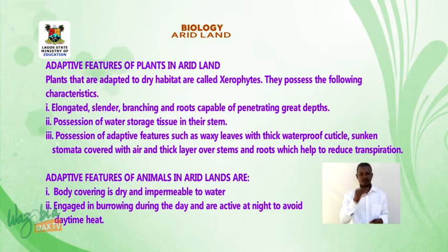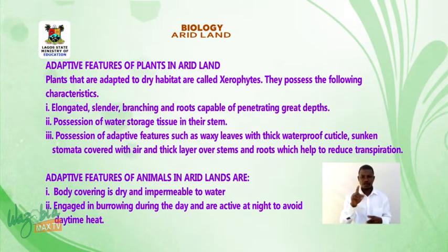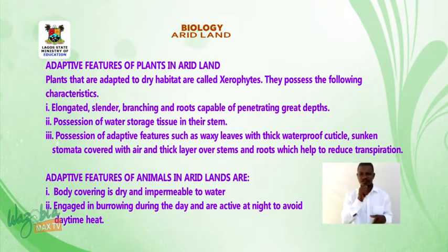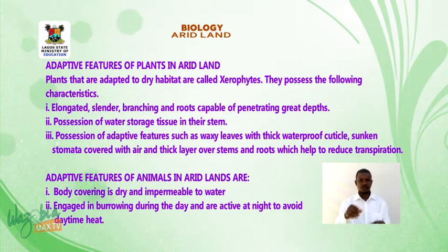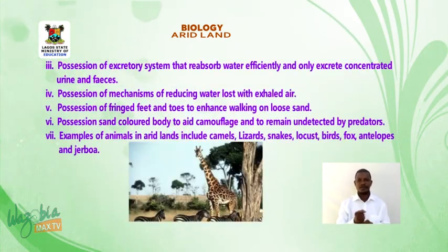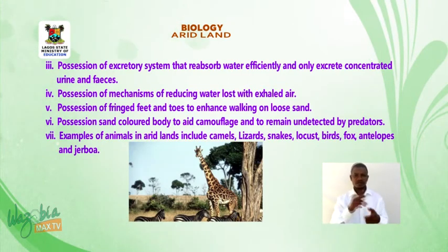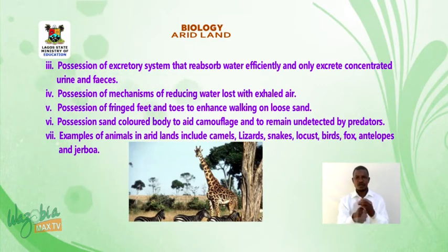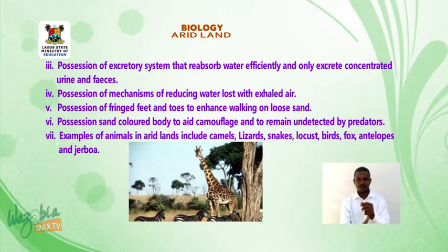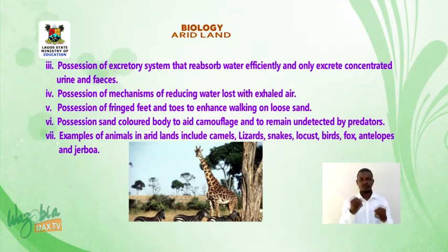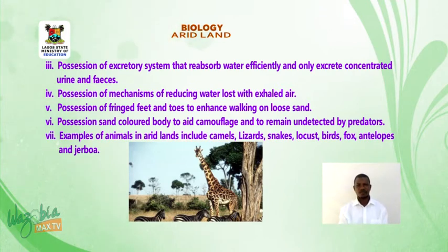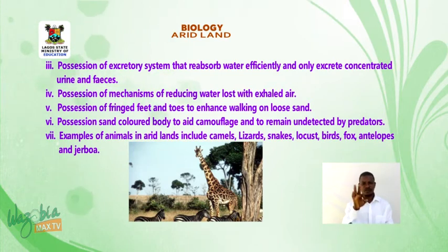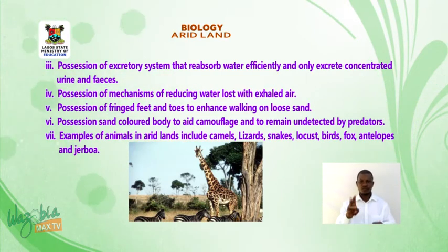Adaptive features of animals in arid lands: one, body covering is dry and impermeable to water; two, they engage in burrowing during the day and are active at night to avoid daytime heat; three, possession of an excretory system that reabsorbs water efficiently and only excretes concentrated urine and feces; four, possession of mechanisms for reducing water lost in exhaled air; five, possession of fringe feet and toes to enhance walking on loose sand.